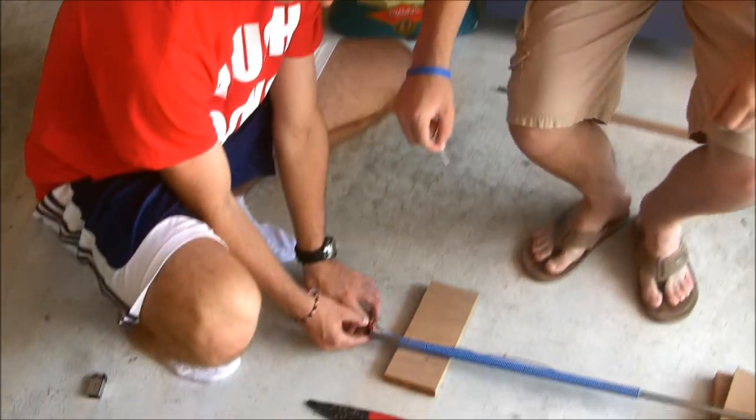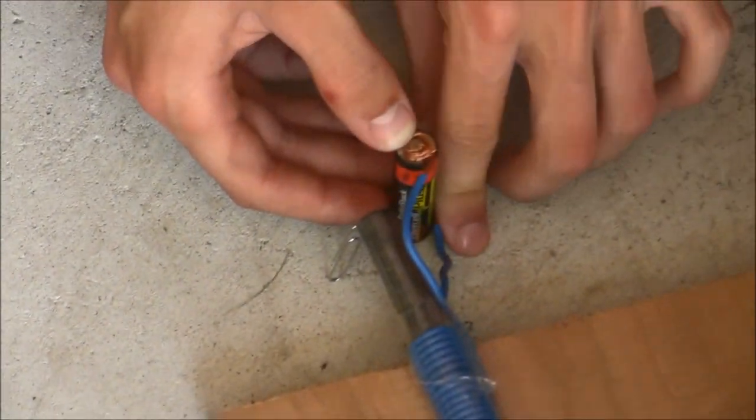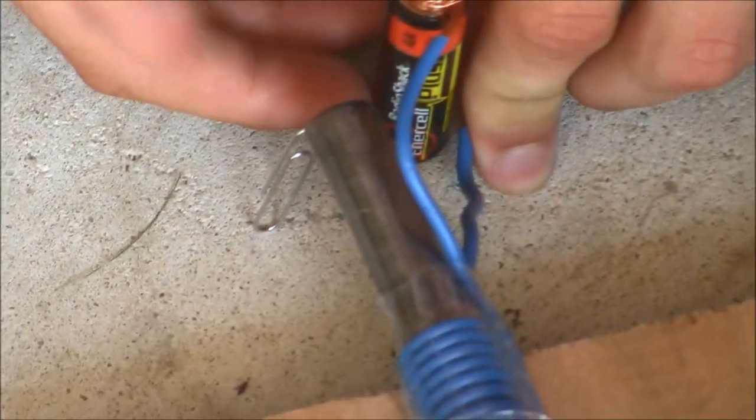Now we are going to use a AA battery, which is 1.5 volts, to show that we will have a very weak magnet. As you can see, the paper clip cannot even remain upright because the magnet is very weak, even at the strongest point.